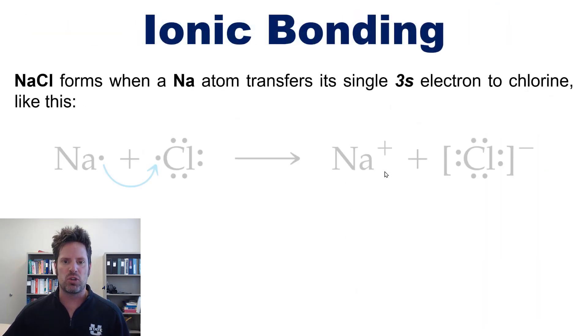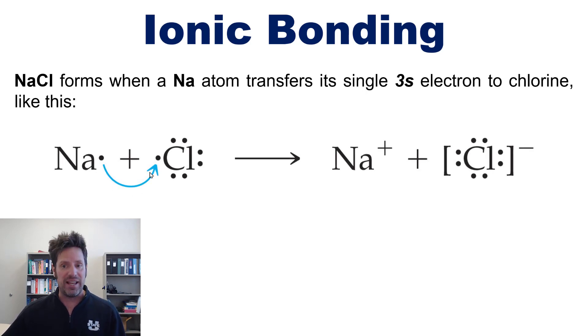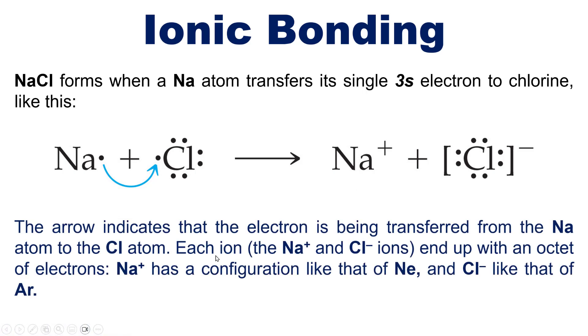Sodium chloride forms when a sodium atom transfers its single 3s valence electron to chlorine like this. Now the arrow here indicates that the electron is being transferred from the sodium atom to the chlorine atom. Once this happens, these two atoms become ions, that is, charged atoms, because they've gained or lost electrons.